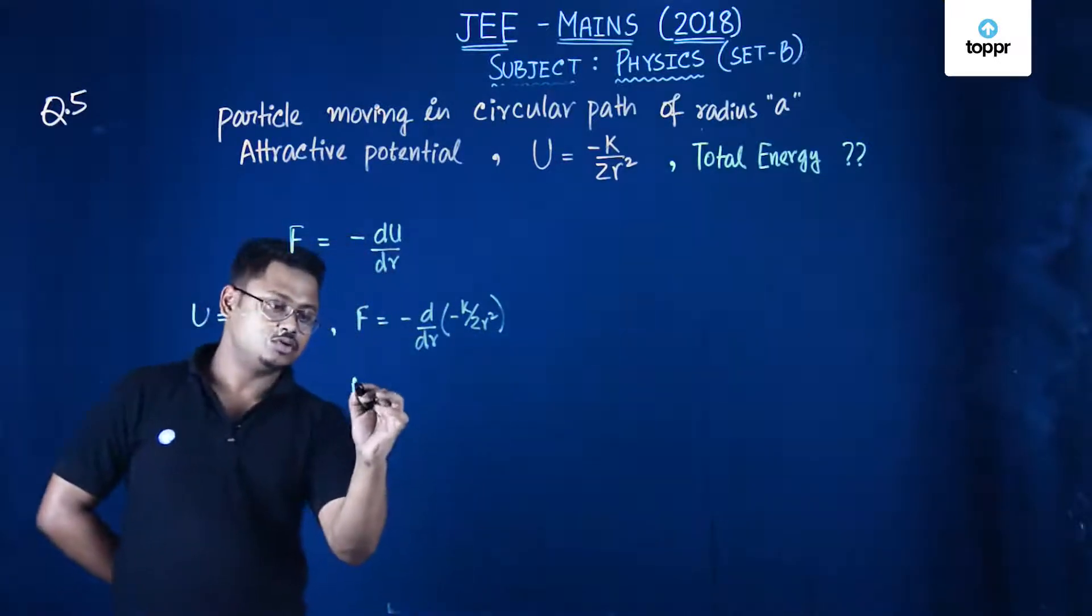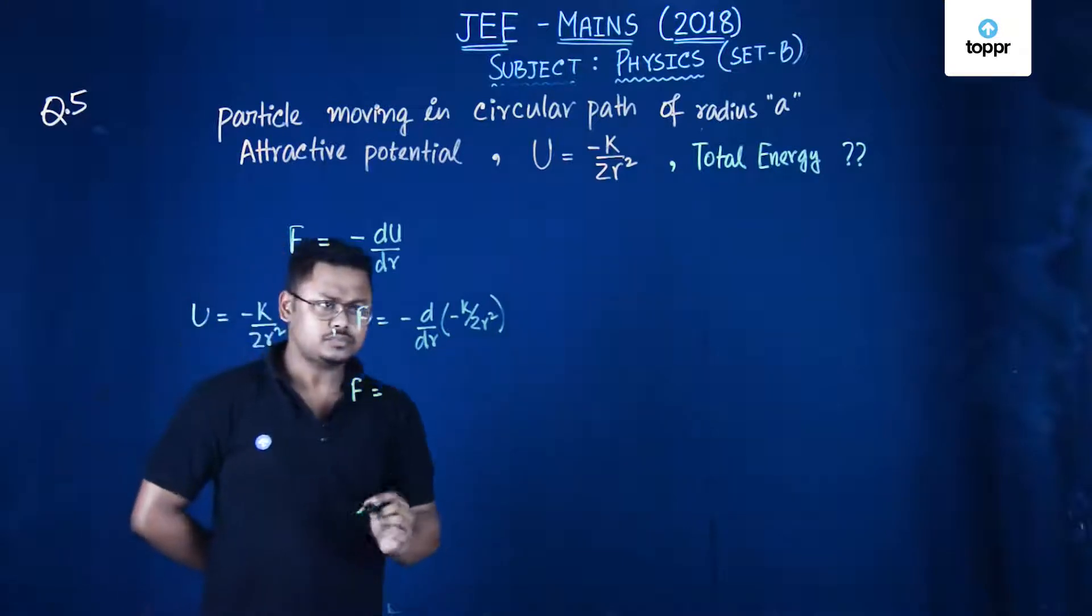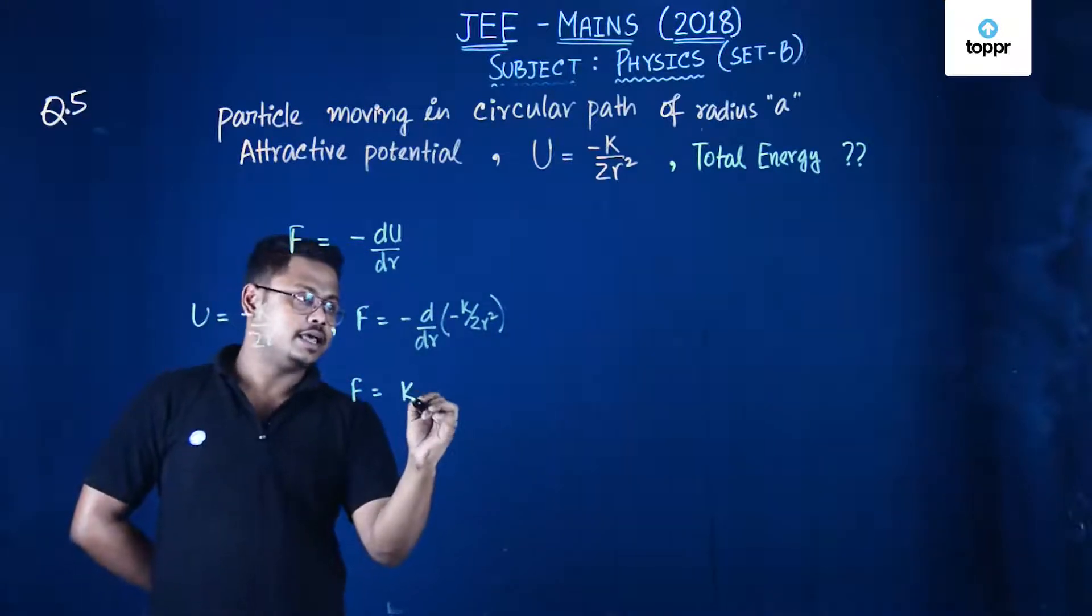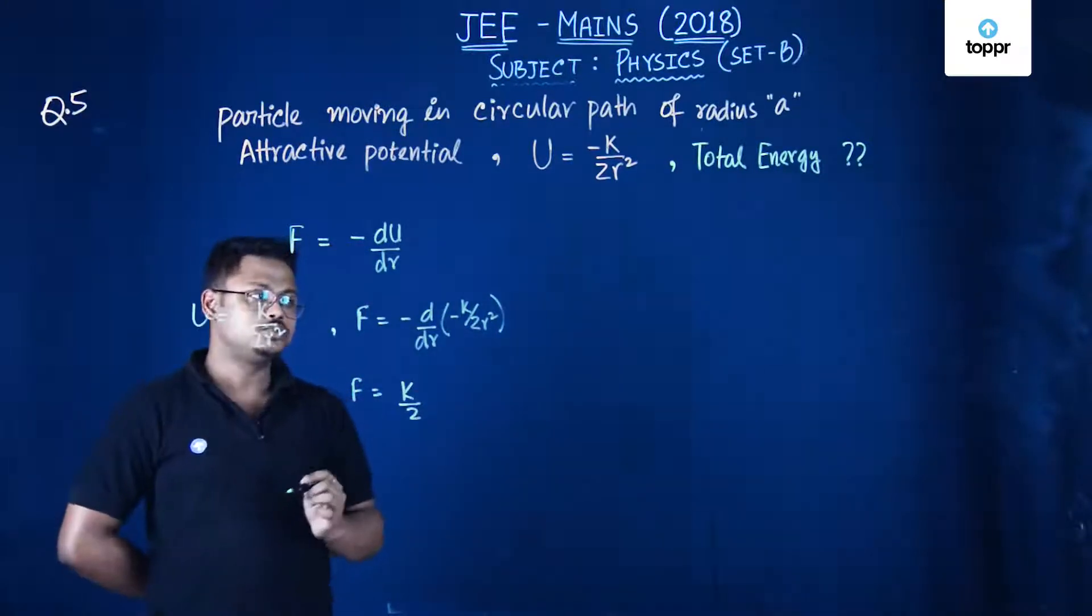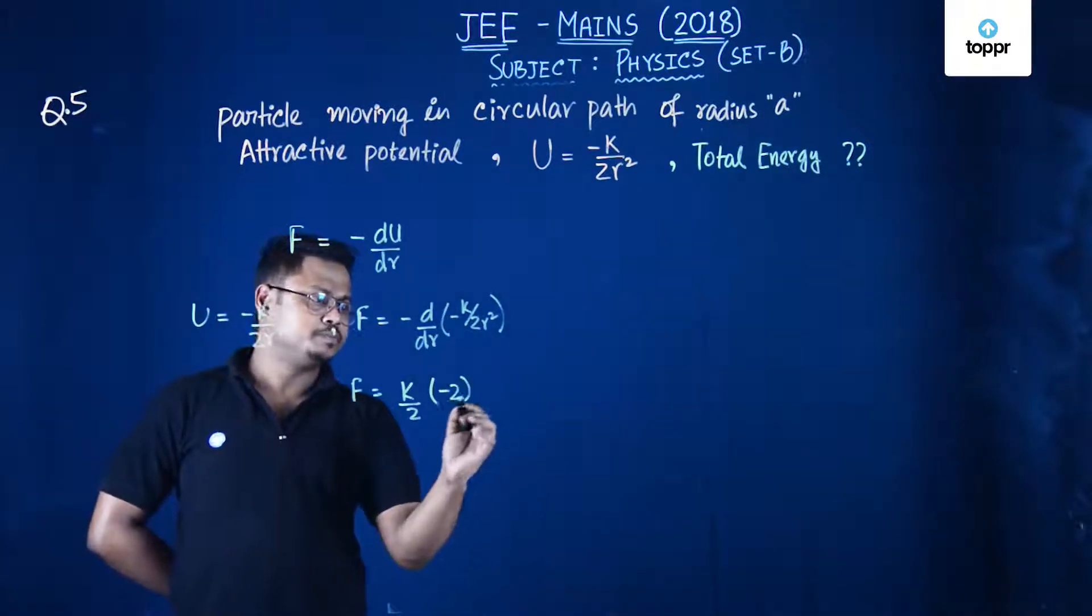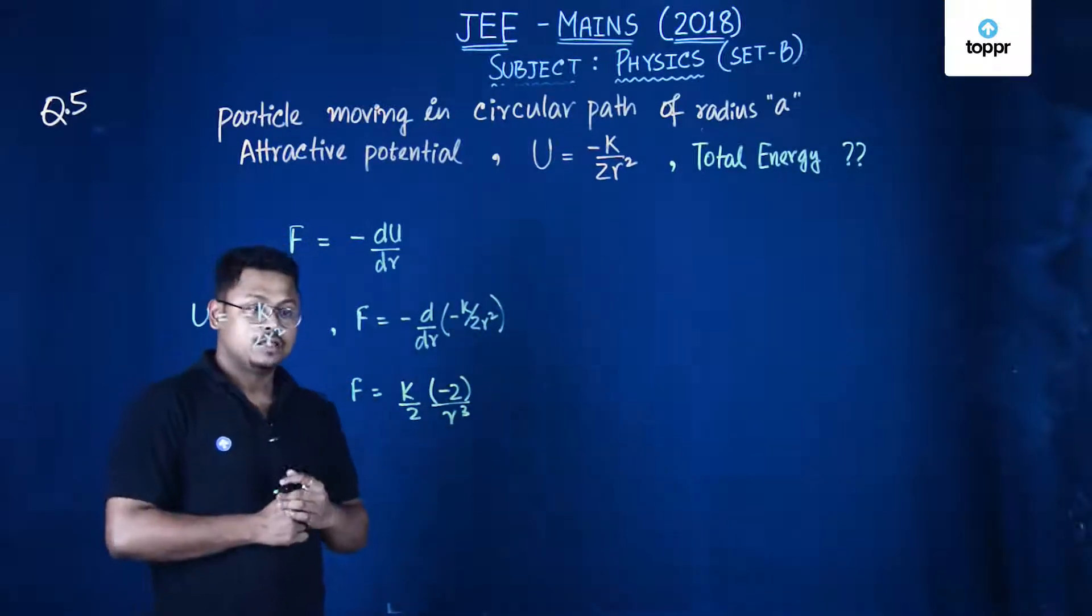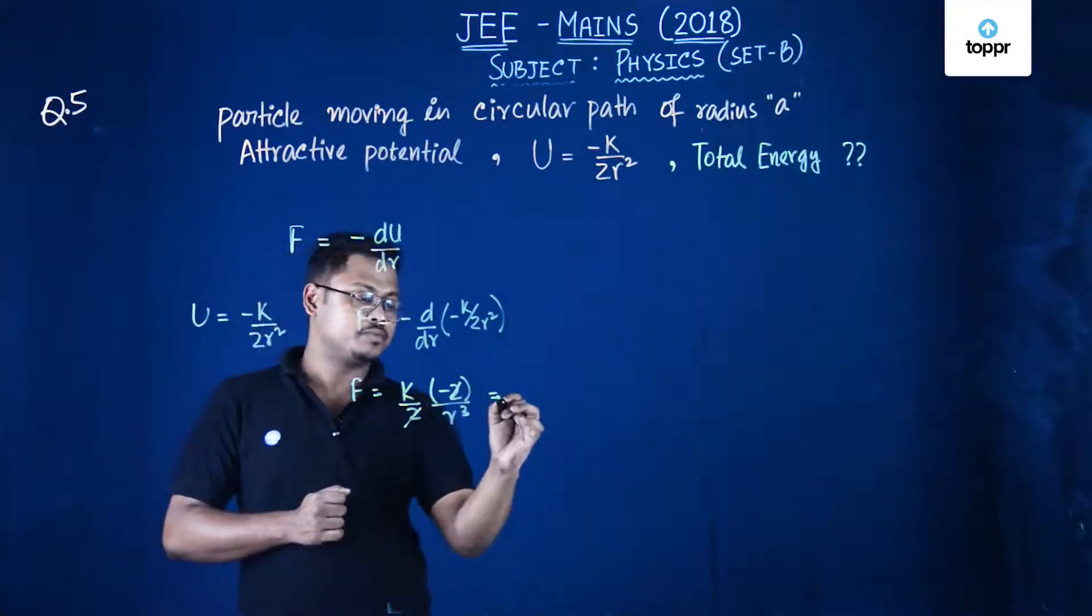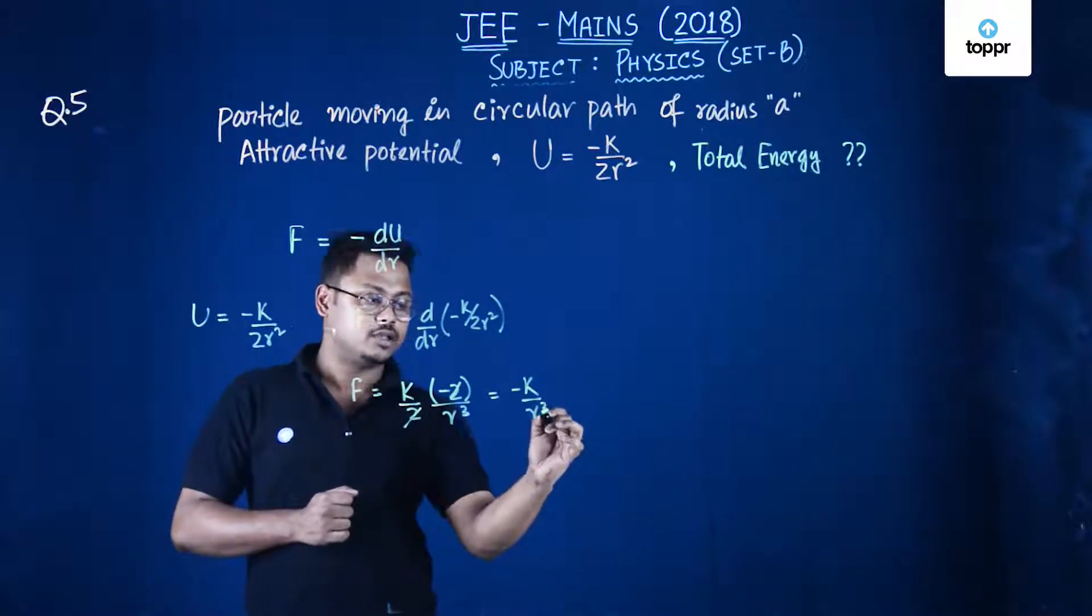So this force will be equals to, this minus will cancel, k by 2 will come out and it will be equals to minus 2 divided by r cube. So the force will turn out to be minus k divided by r cube.